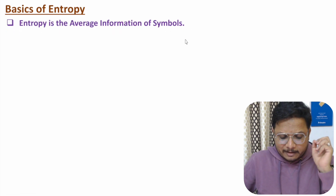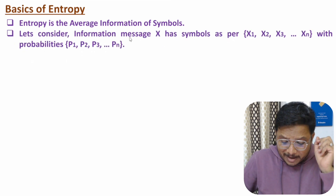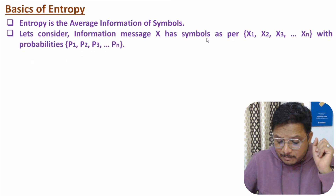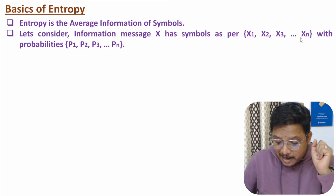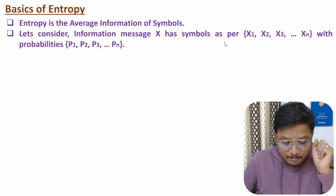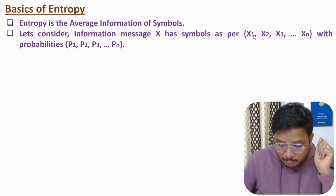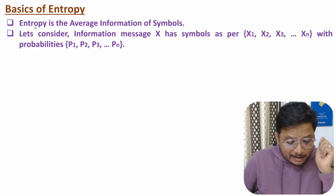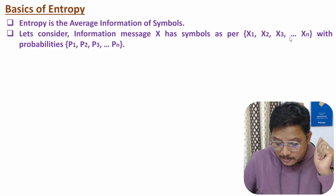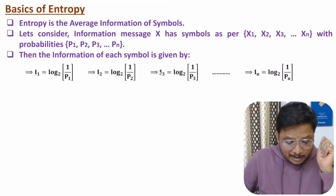Let me explain that. Let us consider we have message X that is having multiple symbols: X1, X2, X3 up to Xn. These symbols have probabilities P1, P2, P3 up to Pn respectively. By calculating the average information of all these symbols, one can calculate entropy. So first of all, we need to identify the information of these symbols. Information can be calculated by log base 2 of one divided by probability.